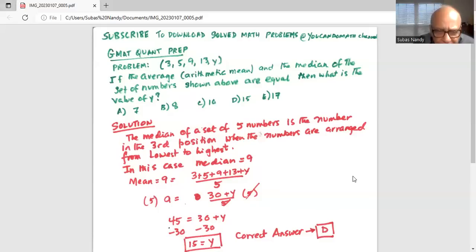Then we will subtract 30 from both sides, from the left as well as the right. So 45 minus 30 is equal to Y. Hence Y is equal to 15 and the correct answer is D, option D.